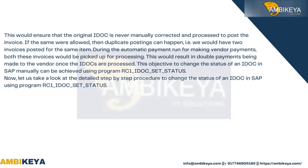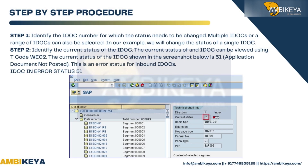If it were allowed, duplicate postings could happen — we would have two invoices posted for the same item. During the automatic payment run for making vendor payments, both invoices would be picked up for processing, resulting in double payments to the vendor. This objective to change the IDoc status can be achieved using program RC1_IDOC_SET_STATUS. Let us now look at the detailed step-by-step procedure.